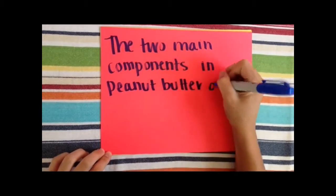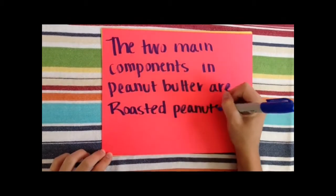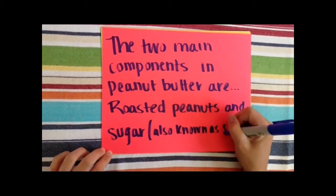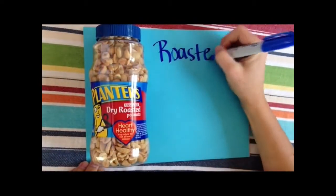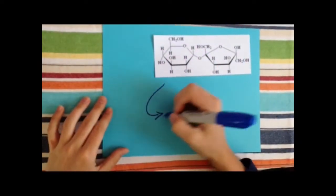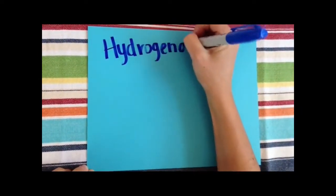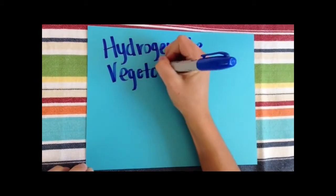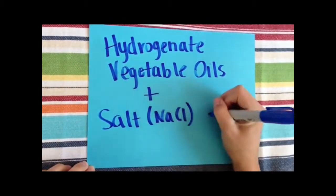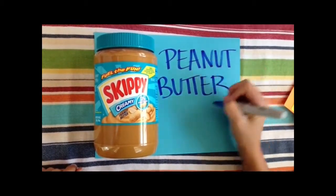The two main components in peanut butter are roasted peanuts and sugar, also known as sucrose. Roasted peanuts plus sucrose plus hydrogenated vegetable oils plus salt equals peanut butter.